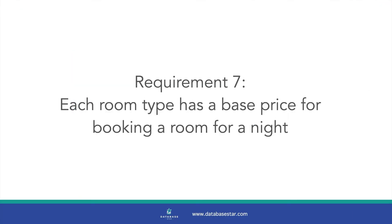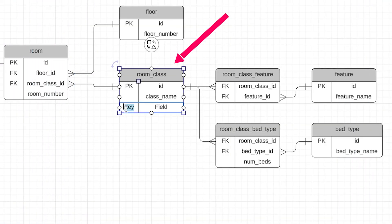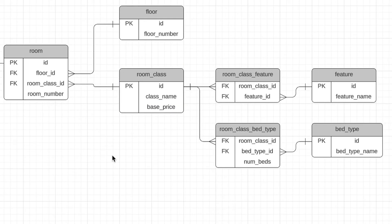Requirement 7 says that each room type has a base price for a booking. On our diagram, we can add a column to the room_class table to represent this. The price value is a number with a lot of variations, so it's fine as just an attribute rather than a lookup table. That's a quick requirement to add.